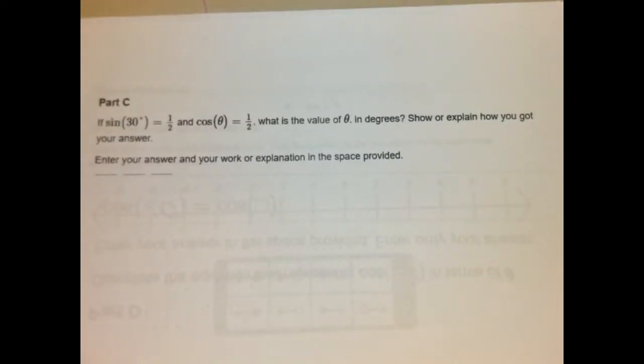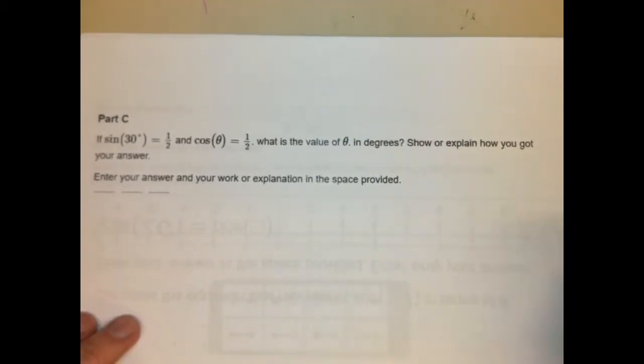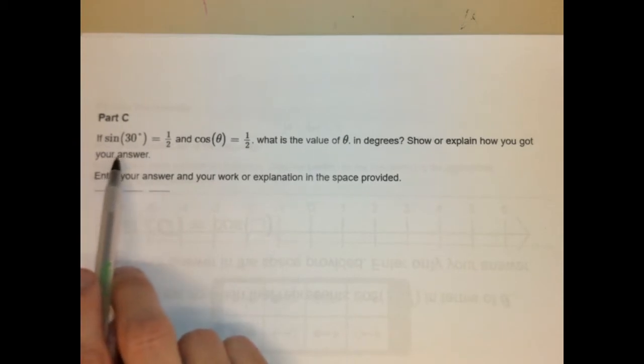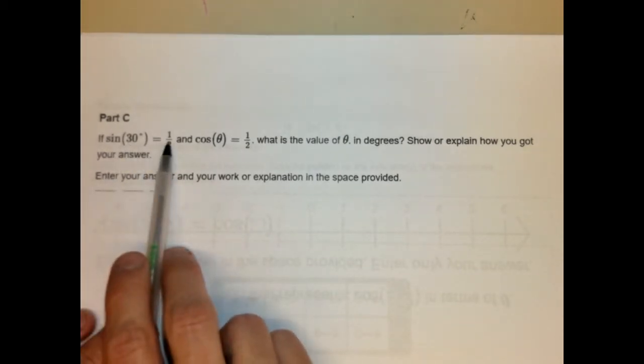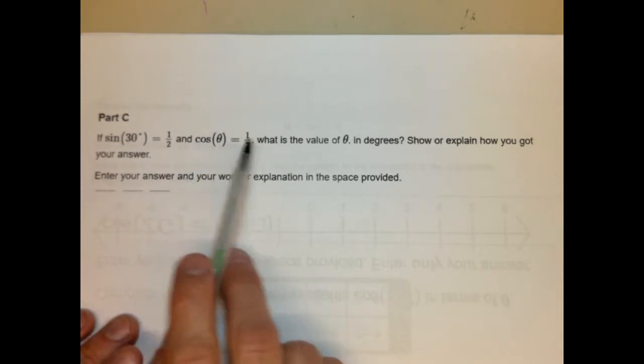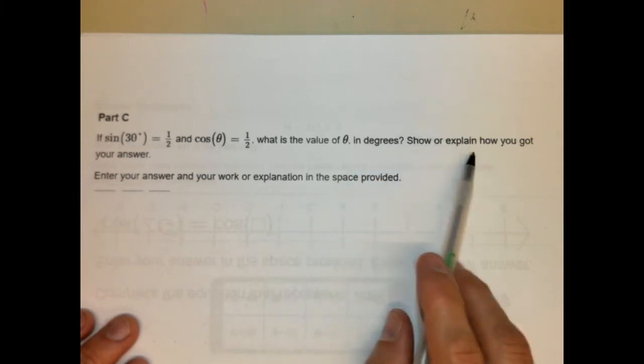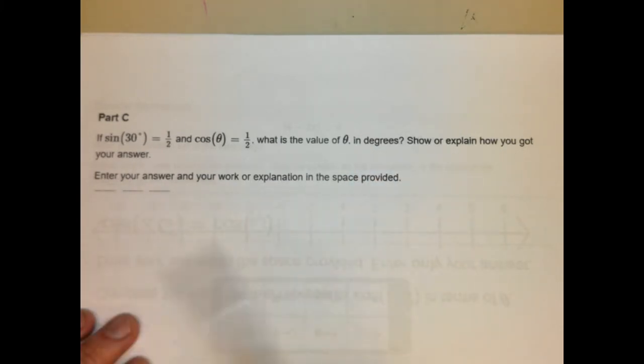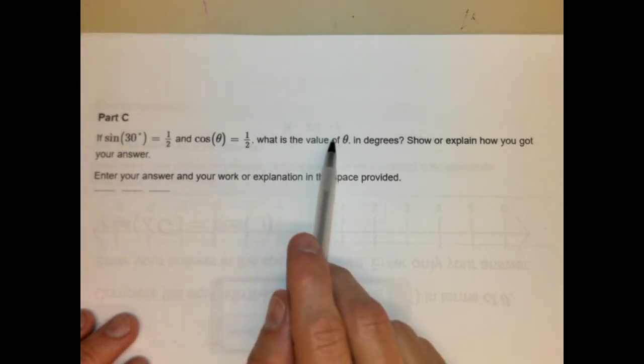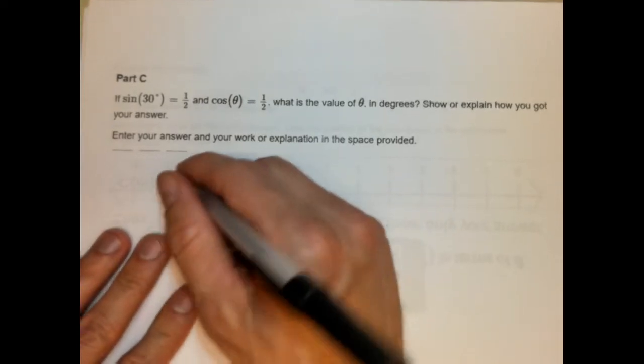Let's take a look at the third part. Now, this one is a little tricky to explain, but I think if you have a good understanding of special right triangles, it's not that bad. All right, so let's go ahead and read this. If sine of 30 degrees is 1 half, and cosine of theta is 1 half, what is the value of theta in degrees? Show or explain how you got your answer. Okay? So we're trying to find the value of theta, right? So let's go ahead and, I want to draw a triangle.